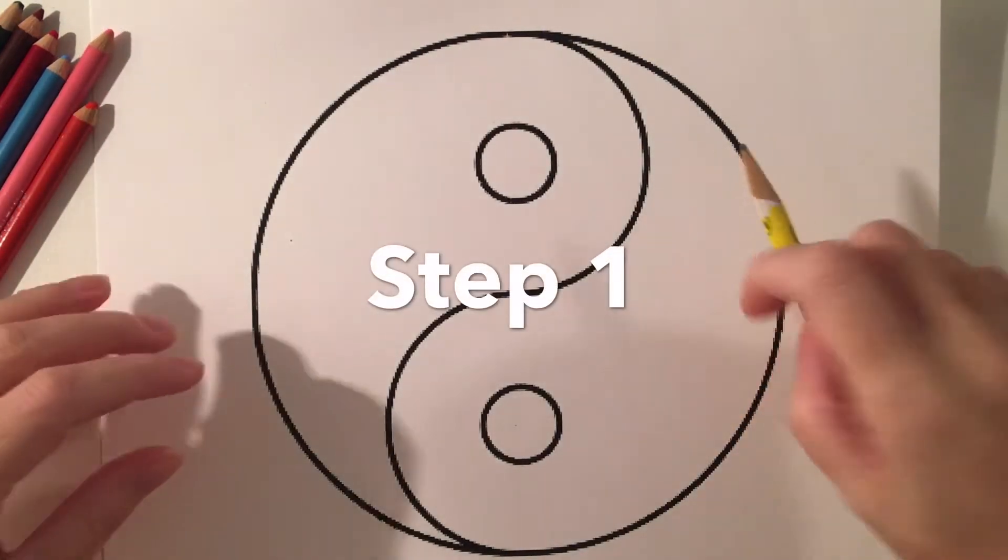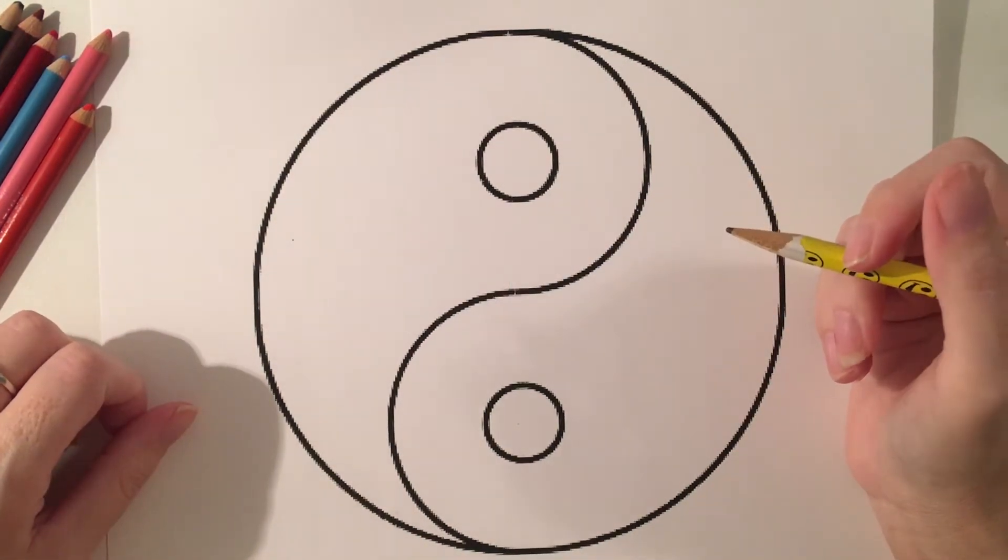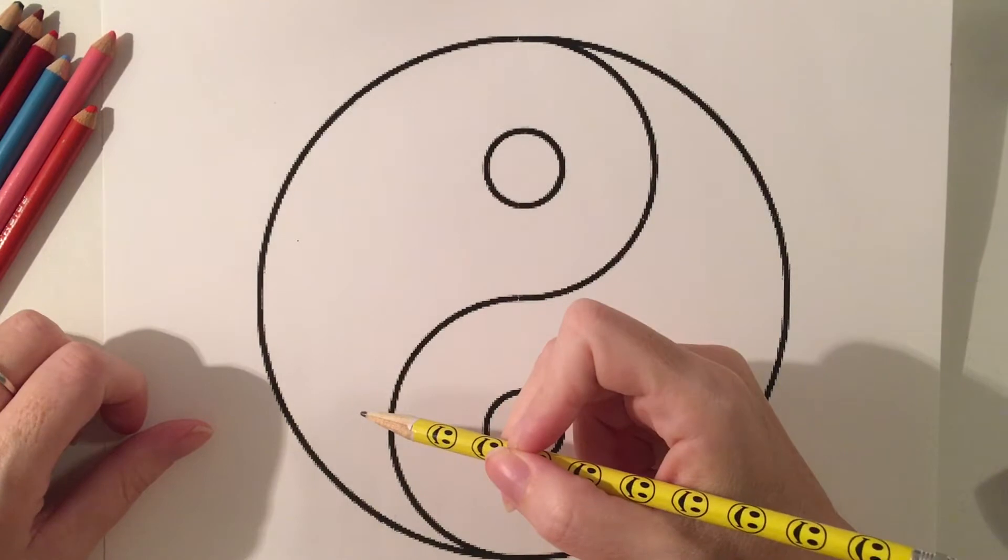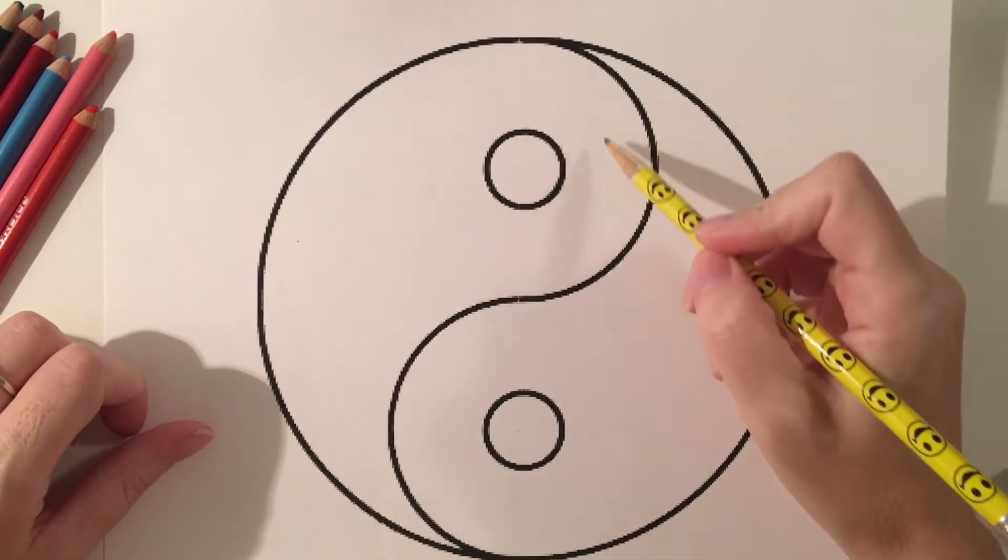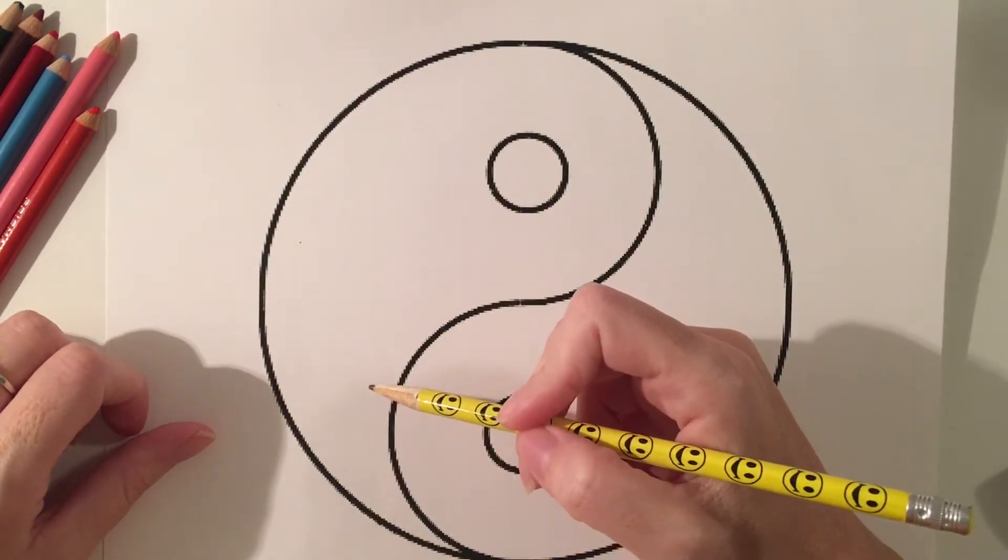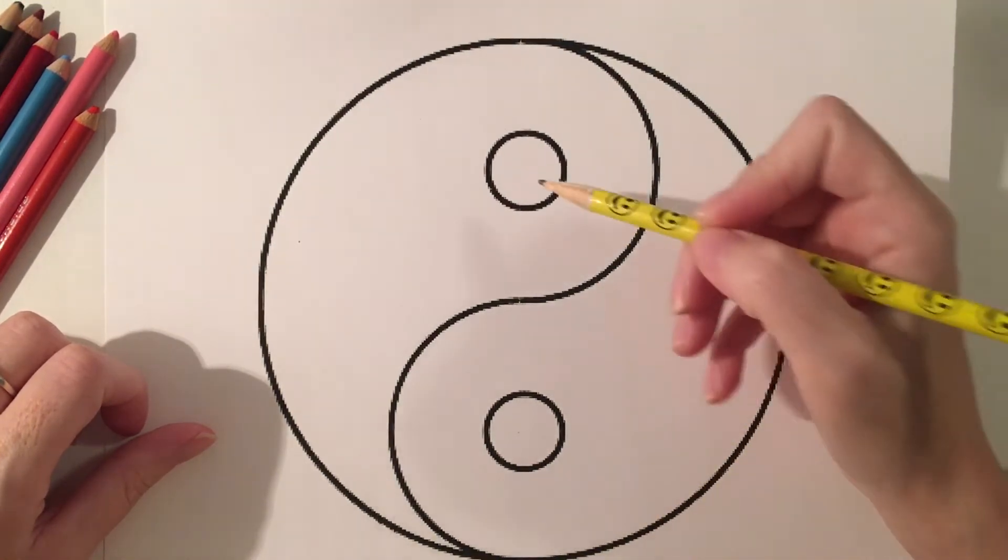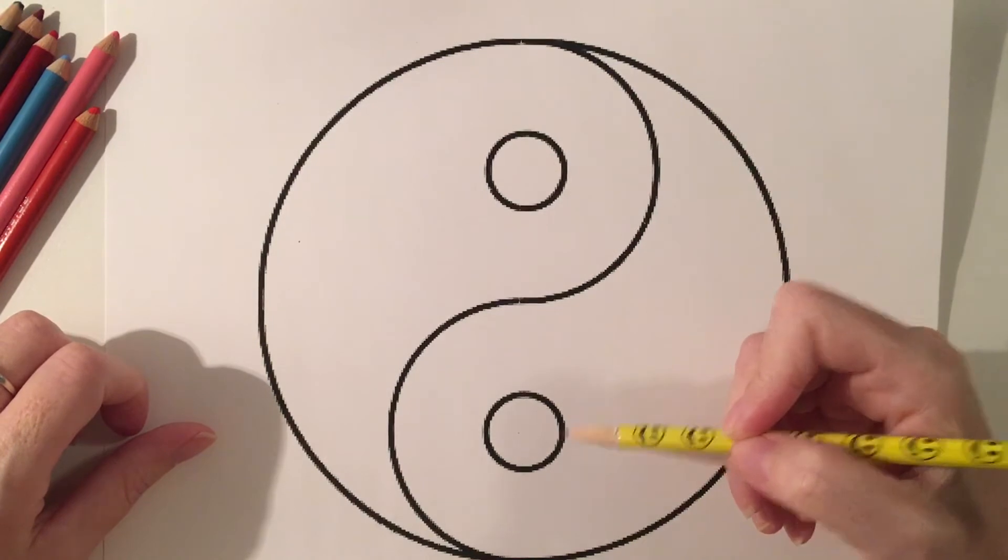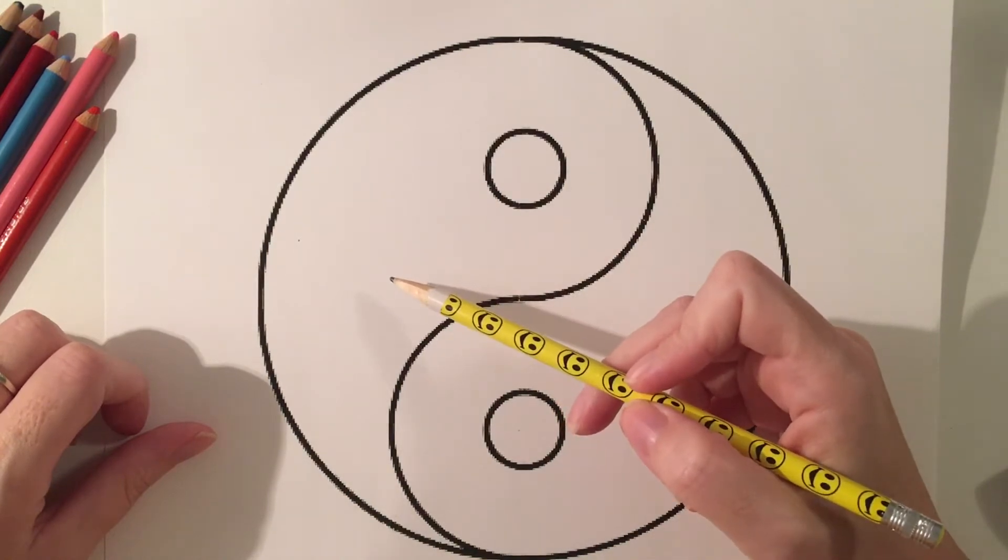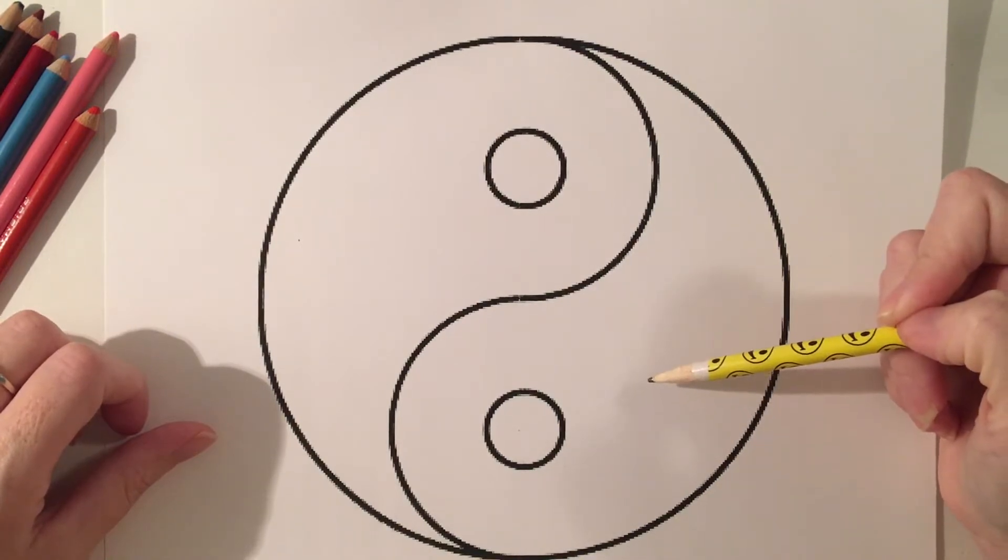The first step of this project is going to require you choosing different zentangles or line and shape patterns that you want to fill in one side of your yin-yang. Typically this side of the large teardrop or paisley shape is white and then this other large side is black and then the opposite on the circles. So for us we're going to use this large left side to fill in with zentangles and then eventually we will fill in with our sharpie solid black on this other section.